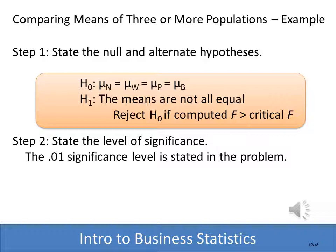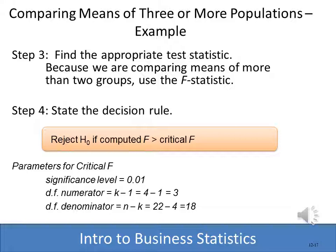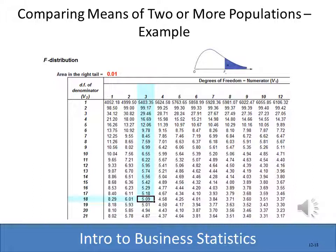We go through the five-step hypothesis testing process. Step one: the null hypothesis is that all satisfaction survey means are equal; the alternate is that they are not equal. Step two: we use the 0.01 significance level. Step three: because we're comparing the means of more than two groups, we use the F statistic. For the critical value, degrees of freedom in the numerator are k minus 1, or 4 minus 1 equals 3; degrees of freedom in the denominator are n minus k, or 22 minus 4 equals 18. With significance level 0.01 and df 3 and 18, the critical F value is 5.09.